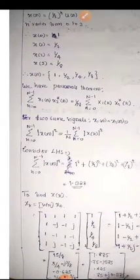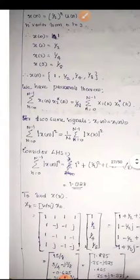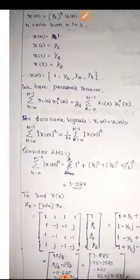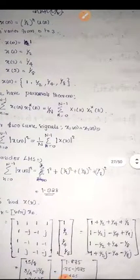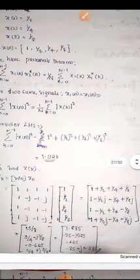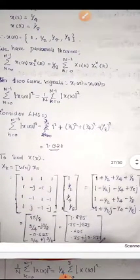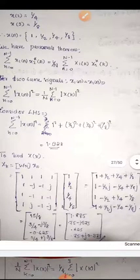Computing the LHS: |X(N)|² for each term gives 1² + (1/2)² + (1/4)² + (1/8)² = 1 + 0.25 + 0.0625 + 0.015625. So LHS is equal to 1.328.